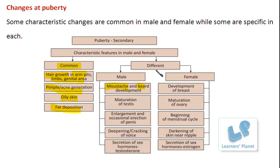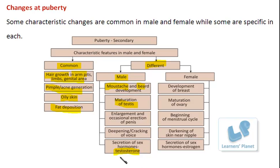There are also features that are different between males and females. In the case of males, as mentioned previously, there is development of hair in the form of moustaches and beard. Besides that, the maturation of testes takes place. Testes are the male gonads which secrete the hormone testosterone. All this growth is controlled by testosterone.